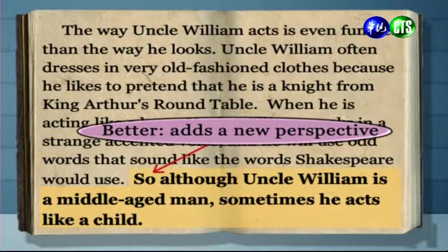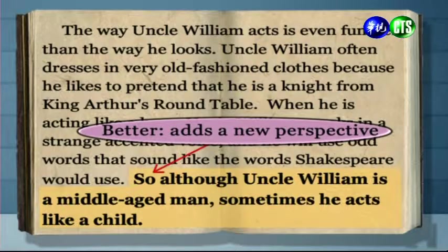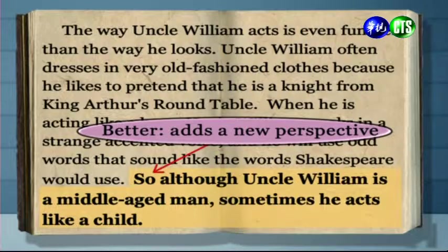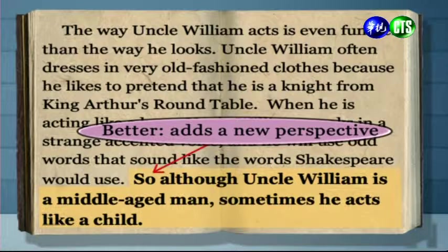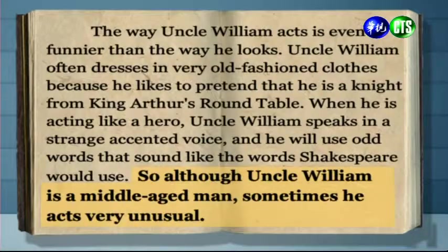Notice how this concluding sentence tries to take the main idea of the paragraph and restate it in a completely different manner. So instead of just stating that Uncle William acts funny or unusual, it states that Uncle William acts like a child, and so therefore it adds a new perspective. 我們可以注意到，雖然他的結尾句其實等於是把主題句用不同的方式來陳述，但是作者去用了不同的字彙，不再平鋪直敘地單純說威廉叔叔行為怪異，而是去陳述說雖然威廉叔叔已經是中年人了，但他的行為還像個孩子。這樣的說法就幫我們增加了另外一個不一樣的看法。